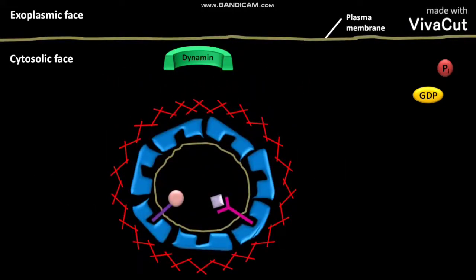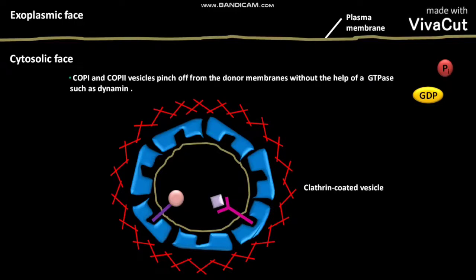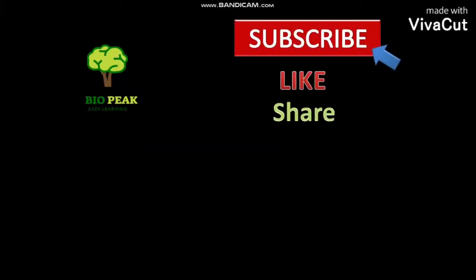The clathrin with changed conformation then depolymerizes. This is the released, fully formed clathrin-coated vesicle. COP1 and COP2 vesicles, by contrast, pinch off from the donor membrane without the help of a GTPase such as dynamin.